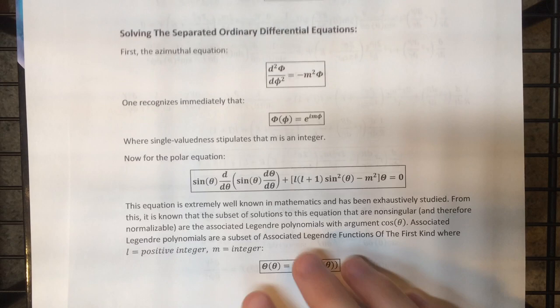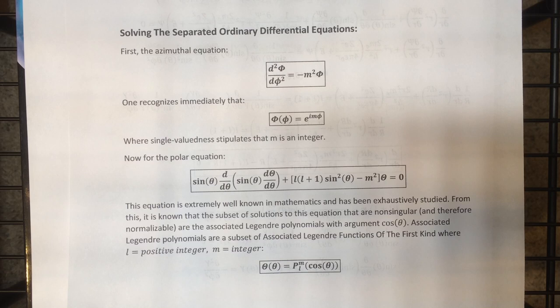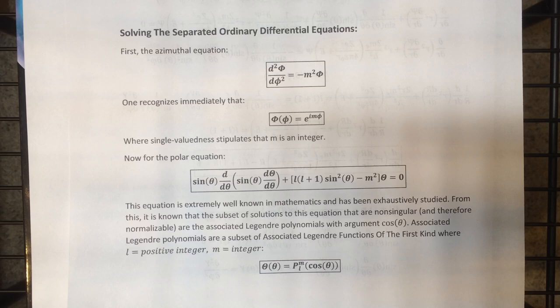Now we've got the polar angular equation to satisfy. If we take x equal to cosine theta and perform the coordinate transformation, this turns into the standard form of the associated Legendre equation. Both in this form and in the standard form, it's extremely well known in math and physics, but it was first exhaustively researched in mathematics.